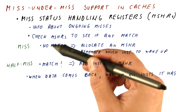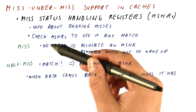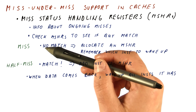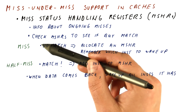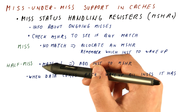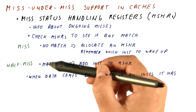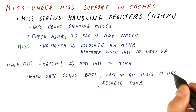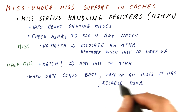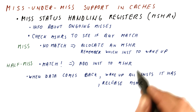Keep in mind that the miss and the half-miss to the same block need not necessarily be to the same word. It's quite common, for example, that you access the first word and then very soon you access the second word in a block — the first word had a miss, and the second word will have a half-miss. After waking up the instructions, we release the MSHR so it can be used by another miss.